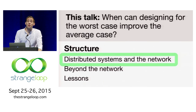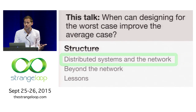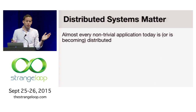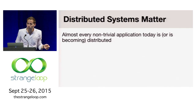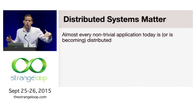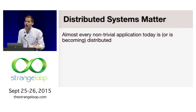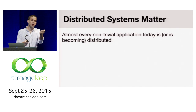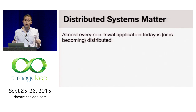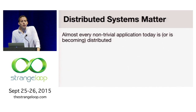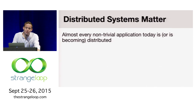To kick things off, let's talk about distributed systems and the network. Almost every application today that is non-trivial is or is becoming distributed. If you want to build a rich application today, there's a good chance you have dependencies on external data sources, APIs you end up requesting when building a mashup, a large-scale service comprised of many microservices, or a service-oriented architecture where no one component plays all the different roles. And very realistically, there's some point in your application where you're opening a socket.